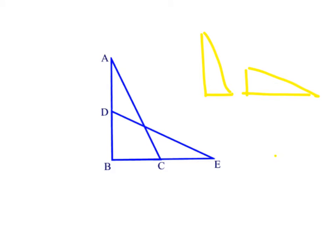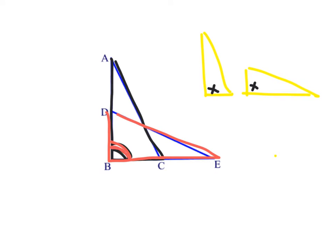What I want you to notice is this little angle down in this corner — see how this angle here happens to be in triangle ABC, and it also happens to be in triangle DBE. Do you see that? So there's something going on there. See if you can figure out what to call it and how to refer to it in your proof.